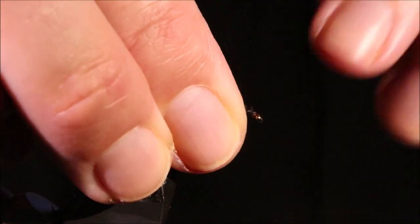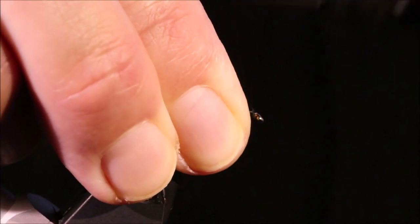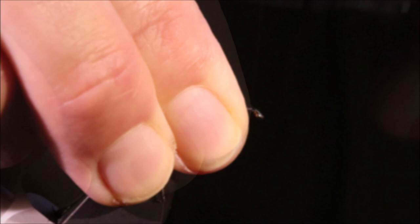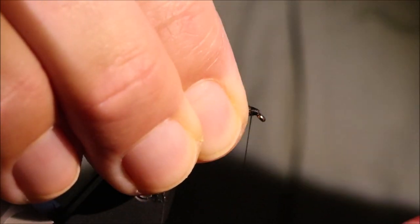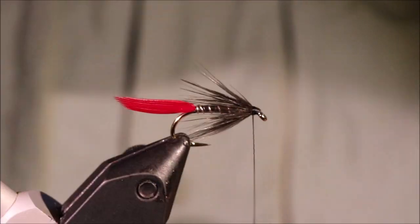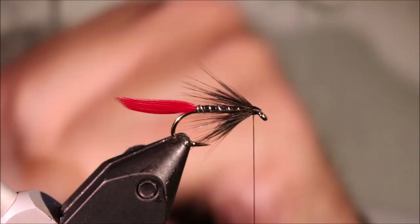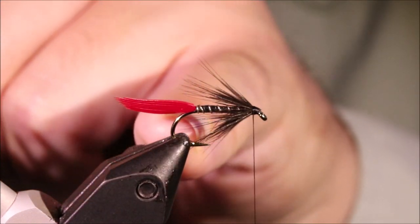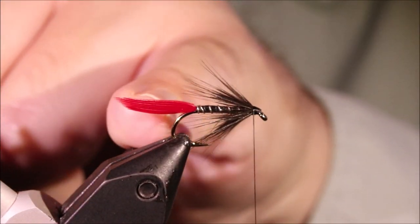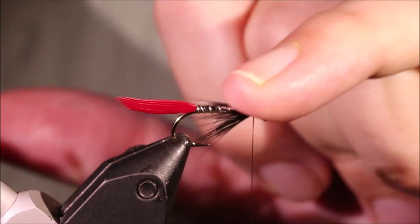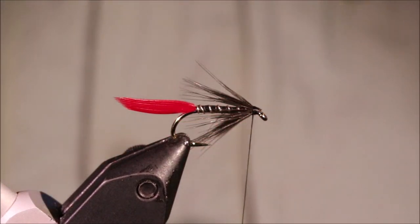I've just got to sweep everything back, tie it in, just tidy the area up, and I'm going to set my head length here, about that. And you can see the hackles are coming into the barb, into the gape there, quite nice. And we're ready for the wing.